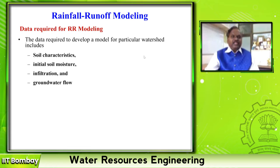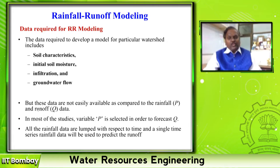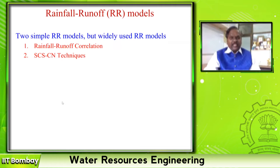These are all the data required for a rainfall-runoff model. Apart from infiltration, rainfall is the major input. Then we need soil characteristics, initial soil moisture, infiltration, and groundwater. The number of parameters you go on adding, the more complex your model becomes, but your results will be more and more accurate — though you need a good and sophisticated tool to solve those equations.